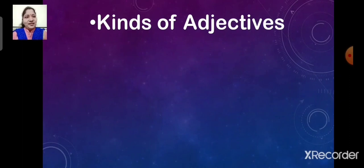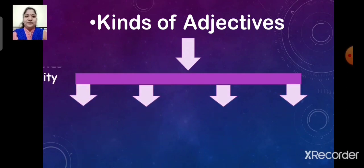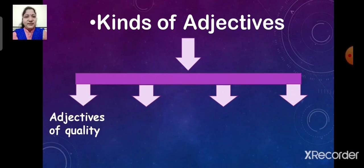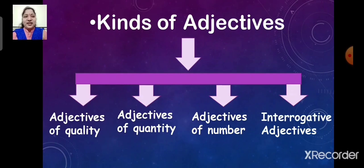There are different kinds of adjectives. They are adjectives of quality, adjectives of quantity, adjectives of number, and interrogative adjectives.